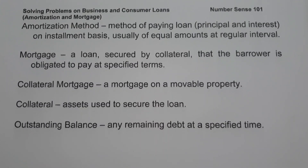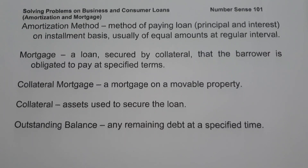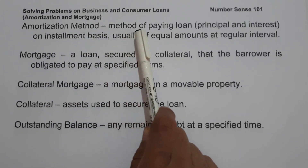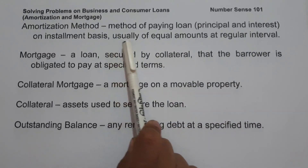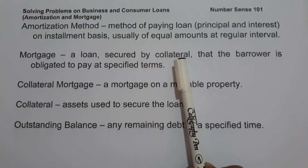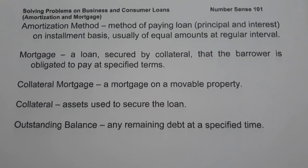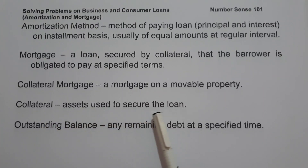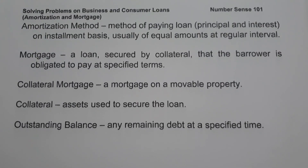For today's video we are going to talk about how to solve problems on business loans and consumer loans, especially amortization and mortgage. The key terms to remember are: amortization method — a method of paying principal and interest on an installment basis, usually of equal amounts at regular intervals; mortgage — a loan secured by collateral that the borrower is obligated to pay at specified terms; collateral mortgage — a mortgage on a movable property; collateral — an asset used to secure the loan; and outstanding balance — any remaining debt at a specified time.